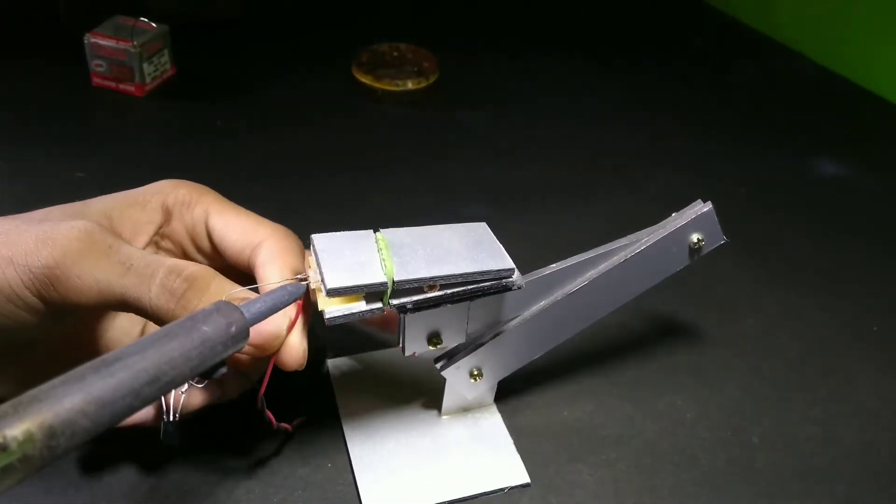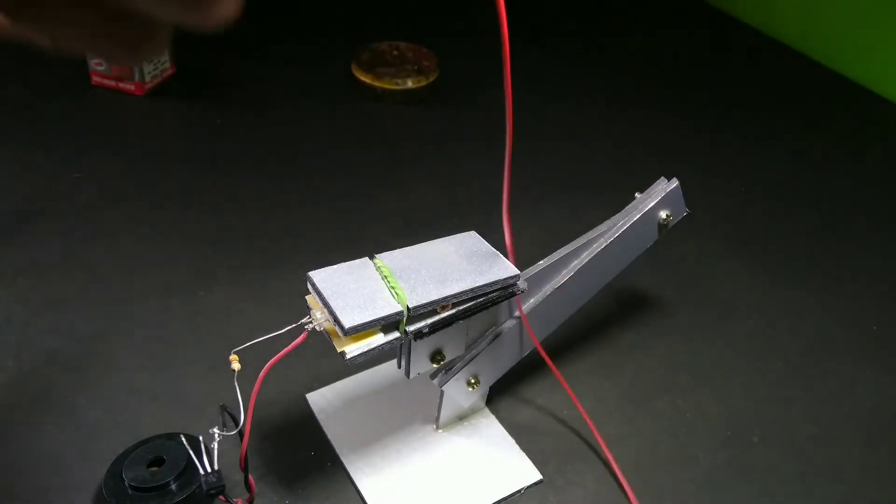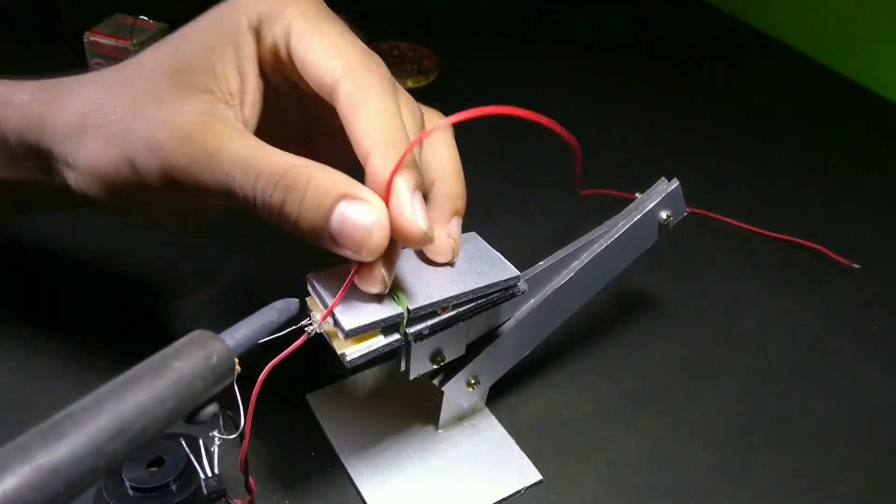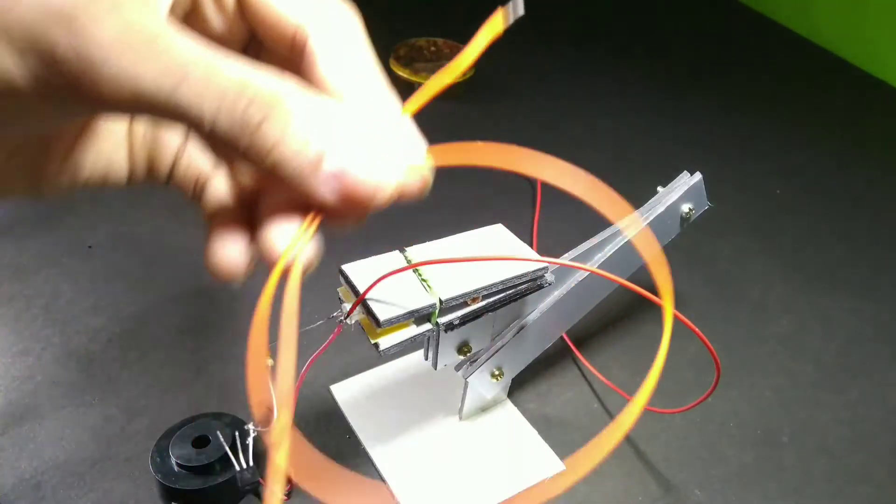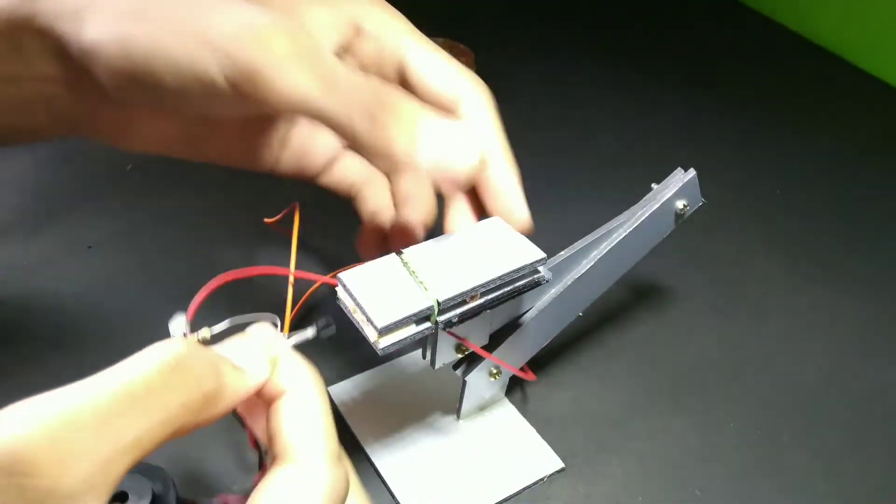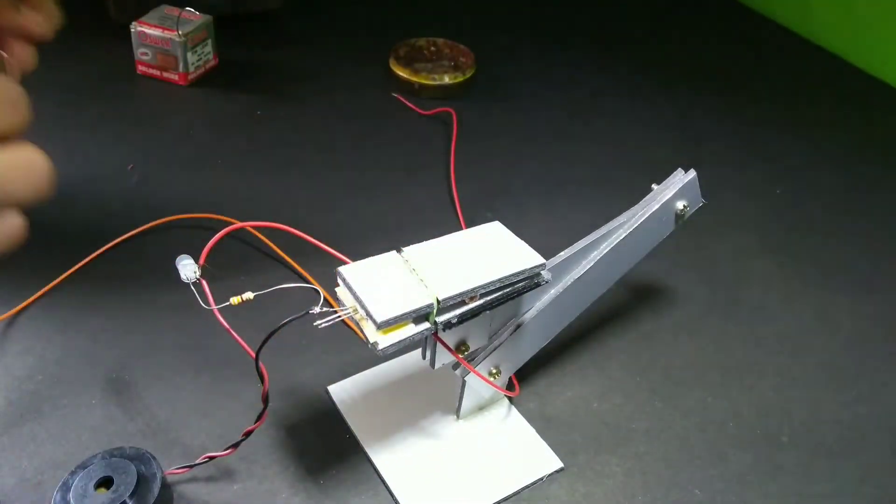I also attach one wire here for our water sensor. After soldering it, I take another wire. First, I remove the LED from the soldering stand and clip the transistor here. Then I solder this wire to the base of the transistor, that is the center tap of our transistor.